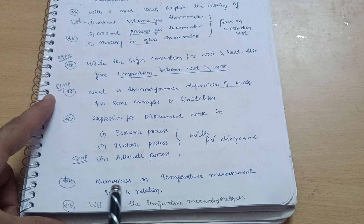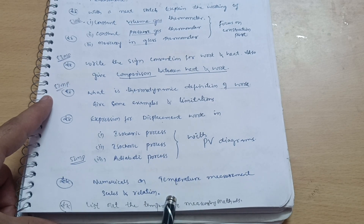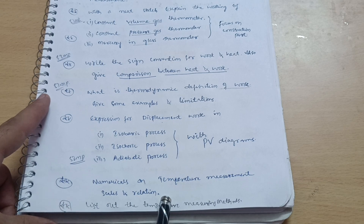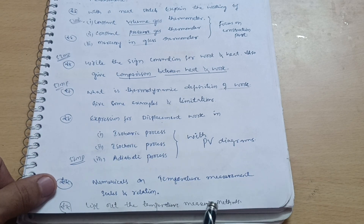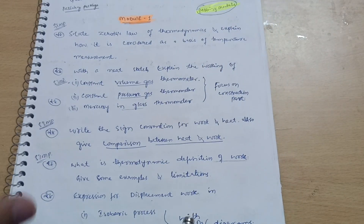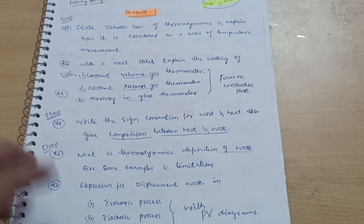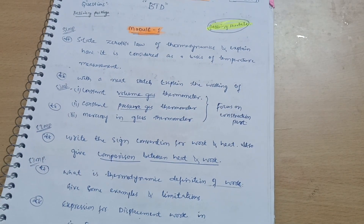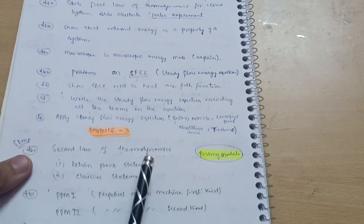Derive the expression for displacement work in the adiabatic process with a PV diagram, and also for the isobaric and isochoric processes. These involve derivations, so go through them and give much more preference to the adiabatic process. Next, there are numericals on temperature measurement scales and relationships — very simple problems. Also list out the temperature measurement methods. This covers Module 1; these questions will definitely come in the examination.